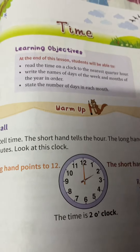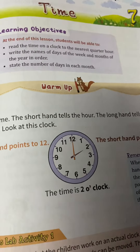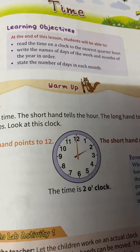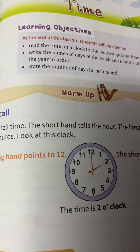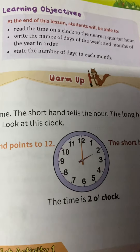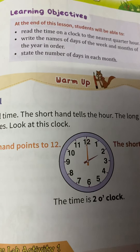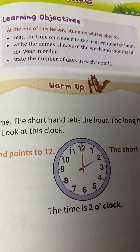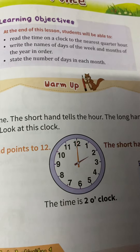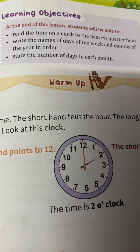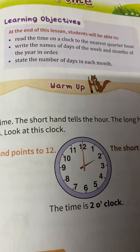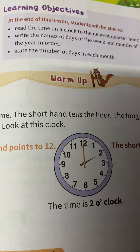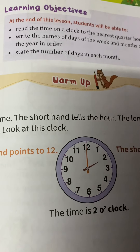1 hour is how many minutes? 60. 1 minute is how many seconds? 1 day is how many hours? 24. 1 year is how many days? 365 days. How many months? 12 months. 1 week has how many days? 7.